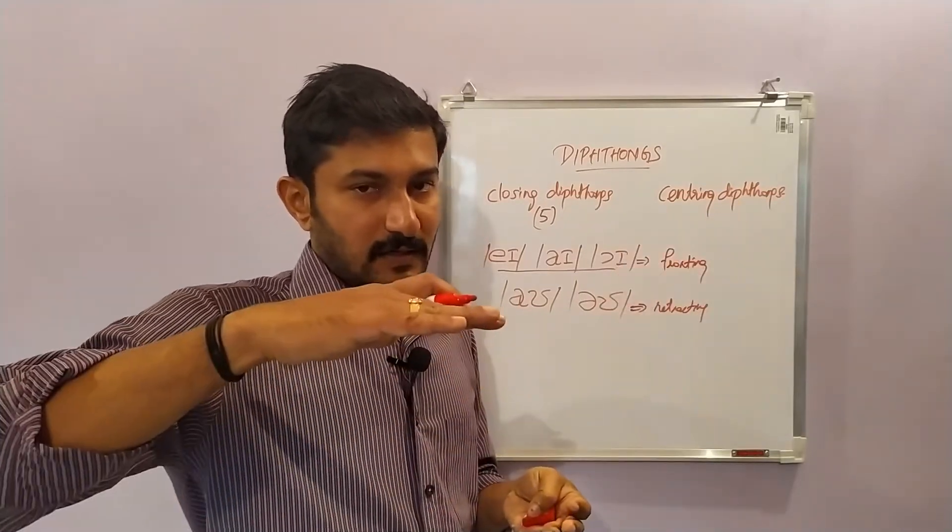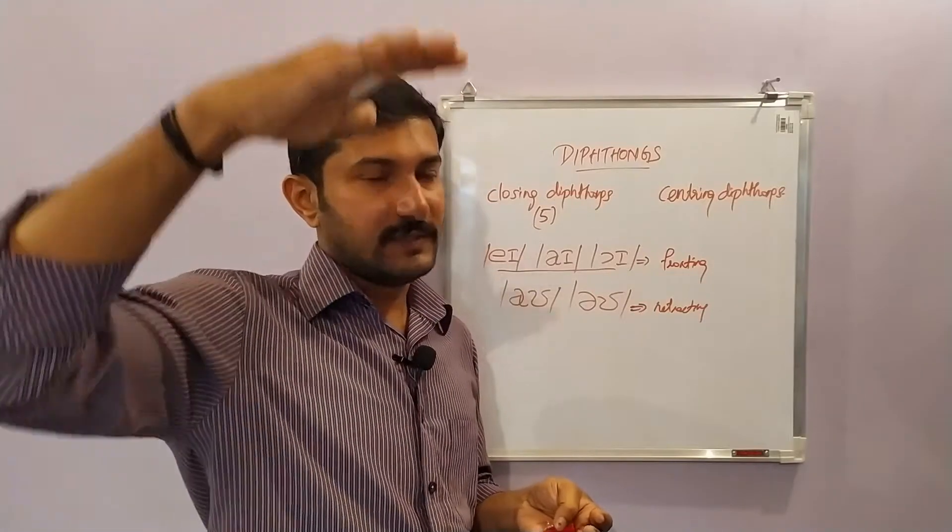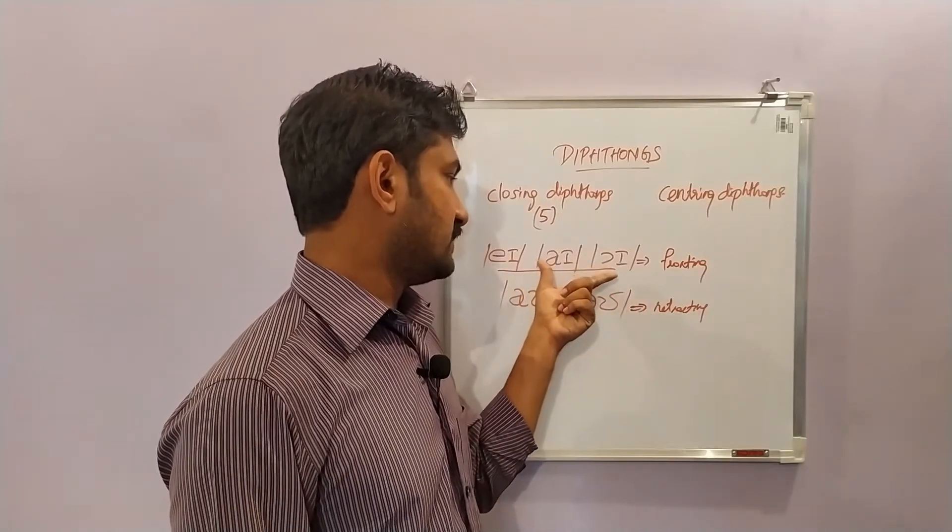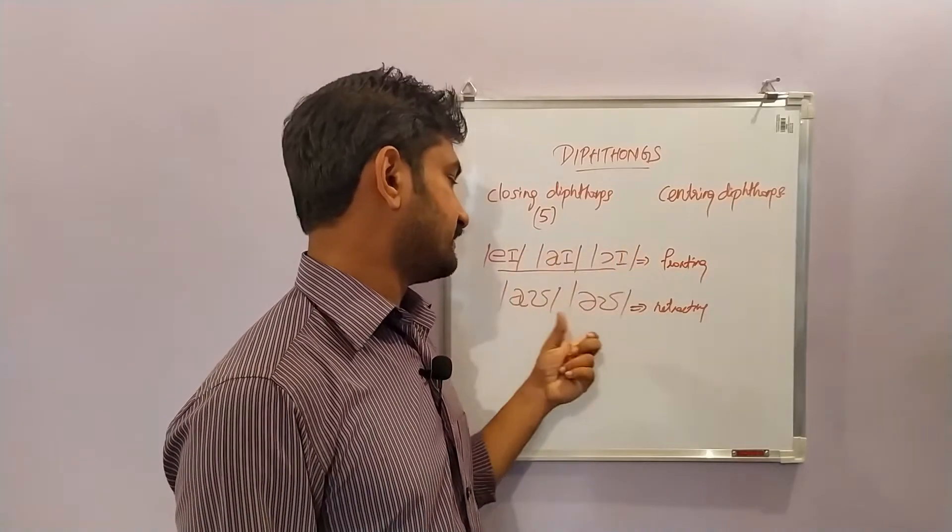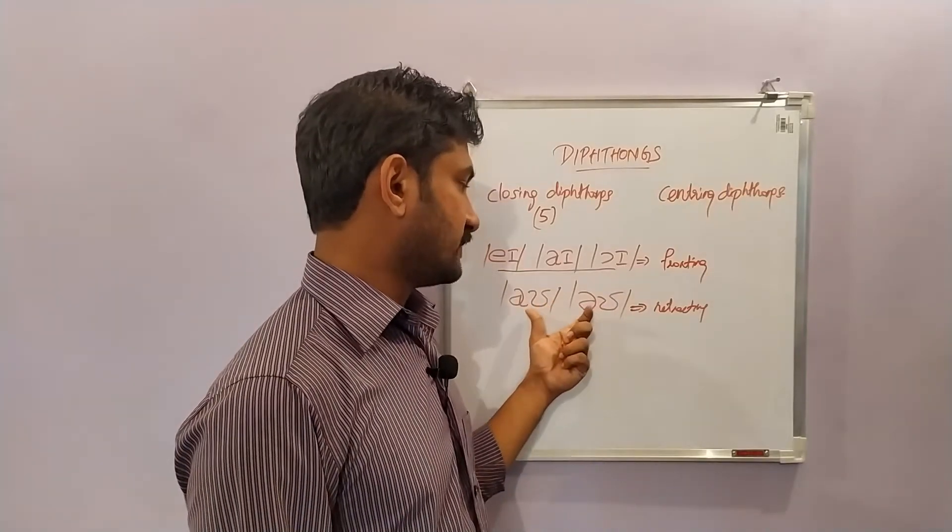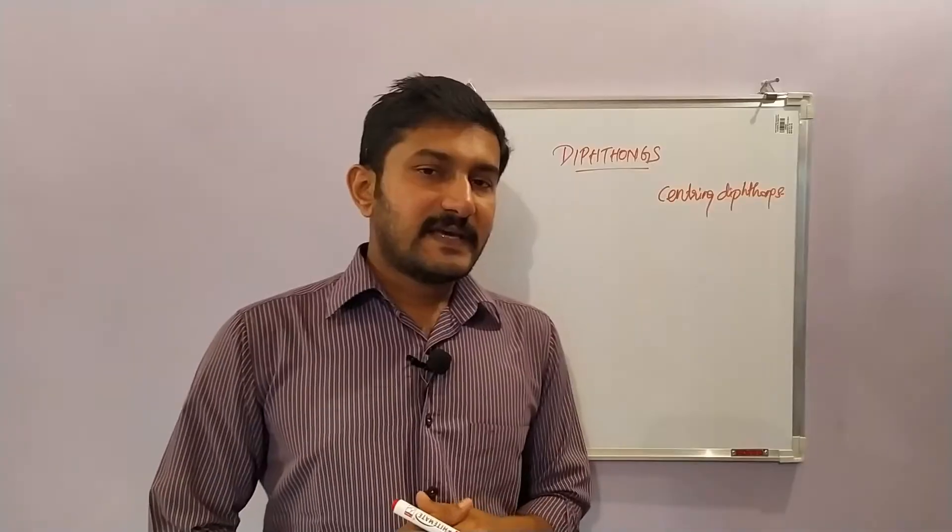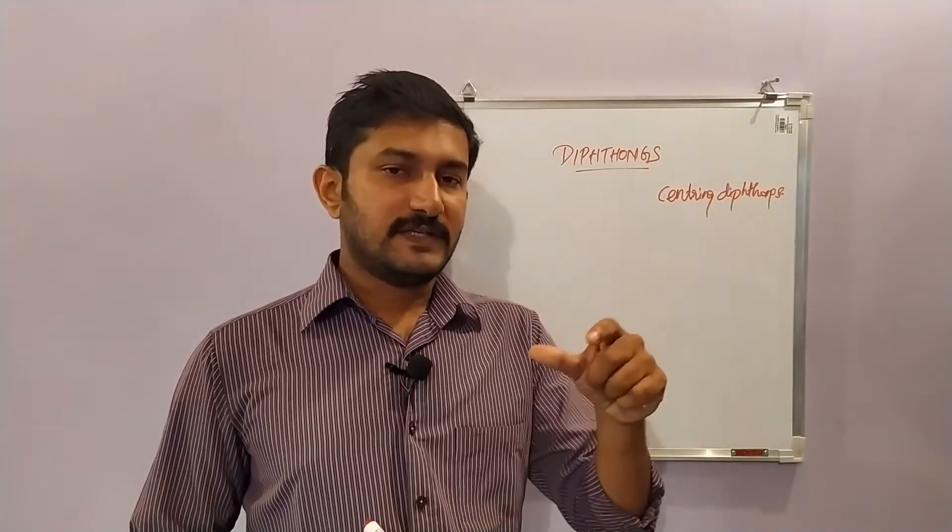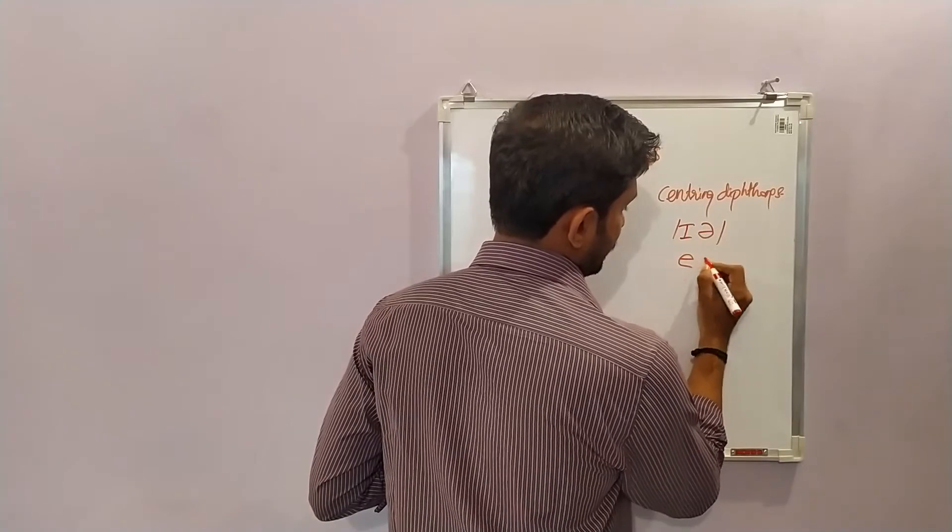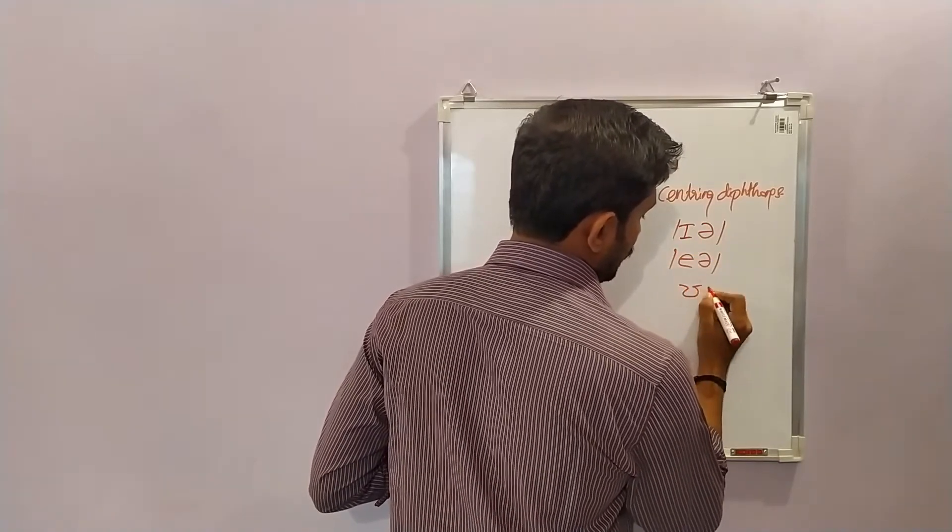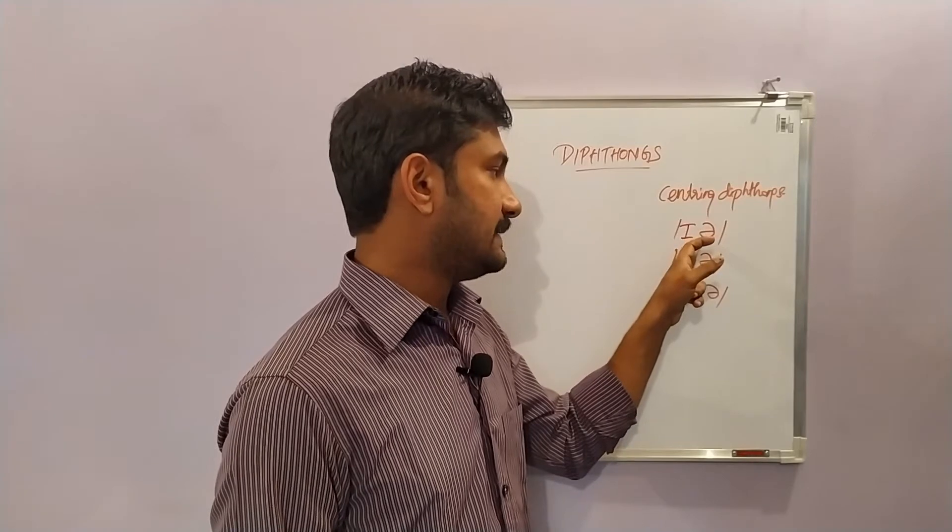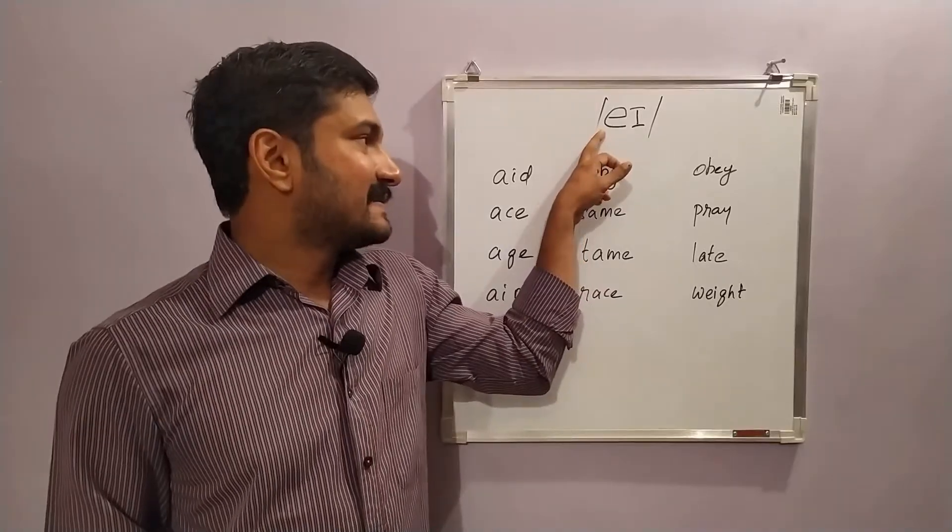These sounds are called closing diphthongs a, i, oi, o, and o, as the tongue is moving from the open or half open position to the close position. In these three sounds, the tongue is moving in the position of a front close vowel, so we call them fronting diphthong. In these two sounds, the tongue moves in the position of a back close vowel, so we call them retracting diphthongs. In the case of centering diphthong, the tongue moves in the position of the central vowel a. We have three centering diphthongs.